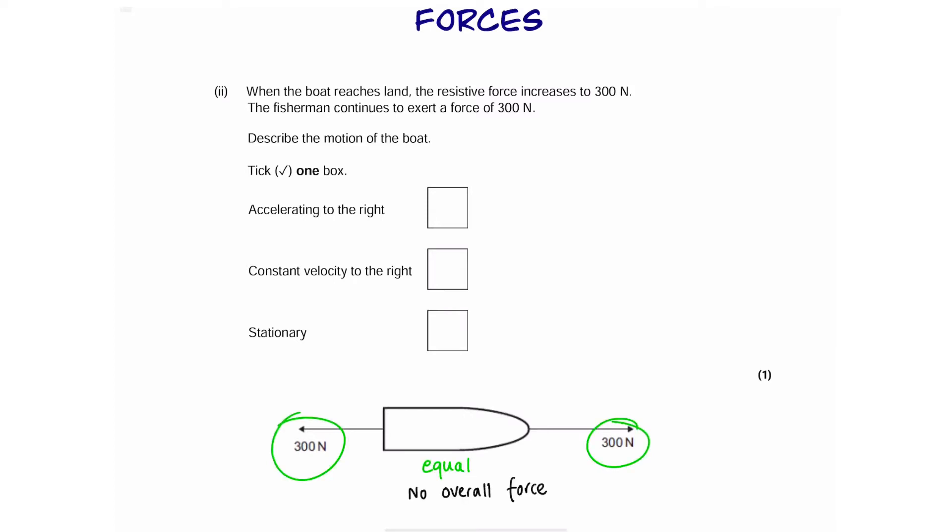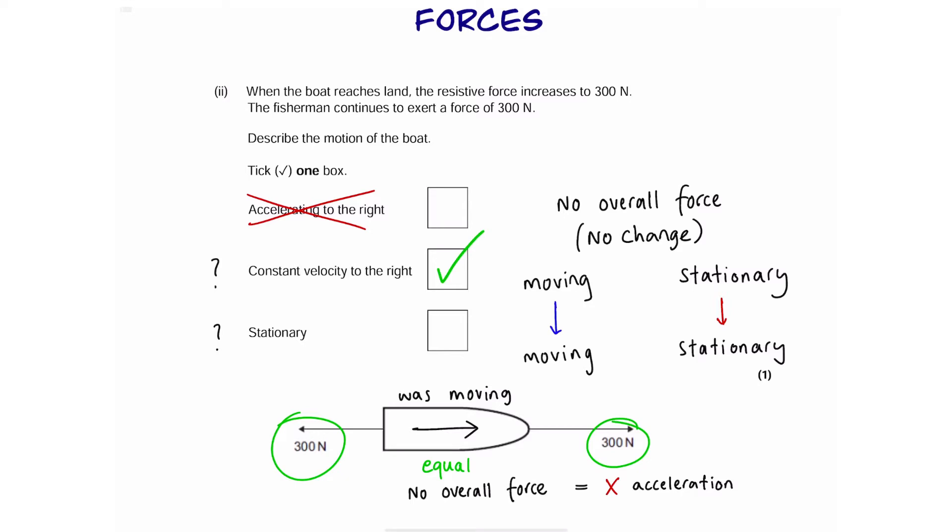So what happens to the boat? Since they are equal, that means there's not going to be an overall force, so therefore there's going to be no acceleration. So we can cross this one out. Now we need to remember that whenever there's no overall force, the object will experience no change in motion. That means if it's moving, it will continue moving at the same speed, or if it's stationary, it will remain stationary. In our question, the boat was already moving, so therefore it will have constant velocity towards the right.